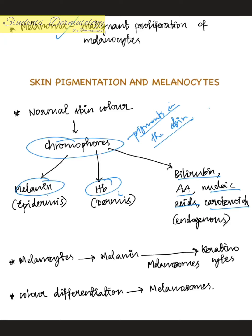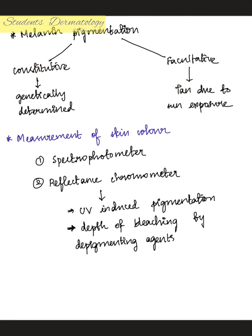Color differentiation between different individuals mainly depends upon the concentration of melanosomes. Melanin pigmentation can be of two types: constitutive — genetically determined, occurring in the absence of sun exposure — and facultative, which occurs due to sun exposure. Measurement of skin color can be done by two methods: spectrophotometry and reflectance chromometry.